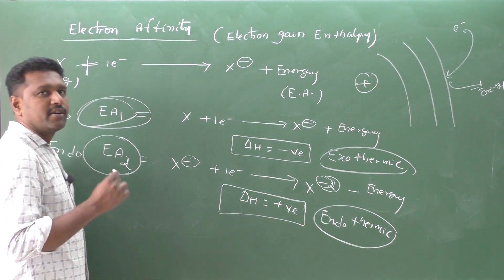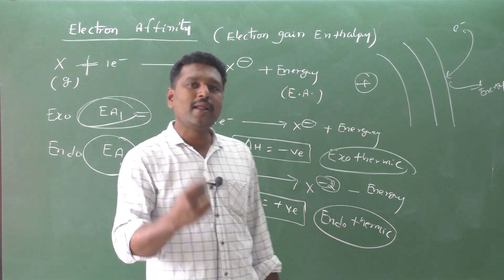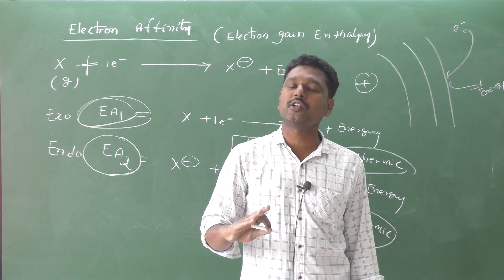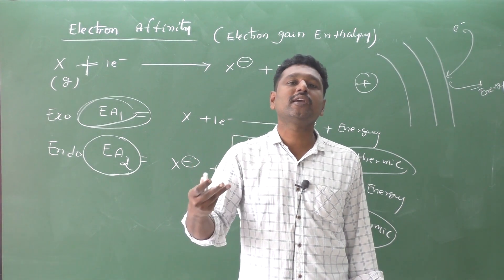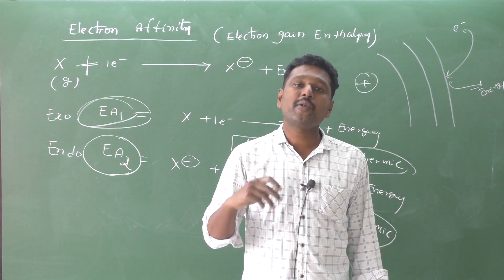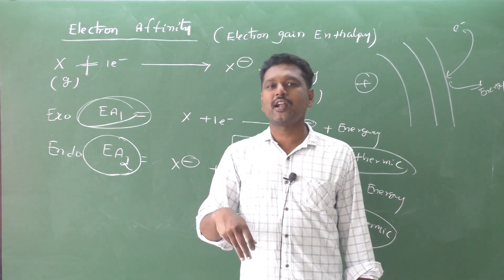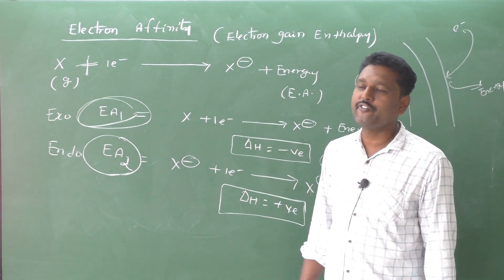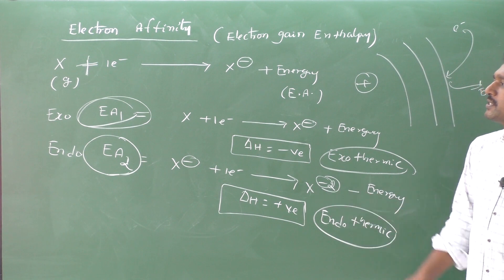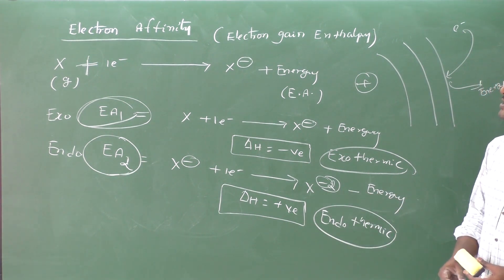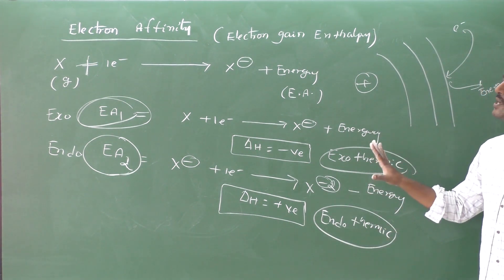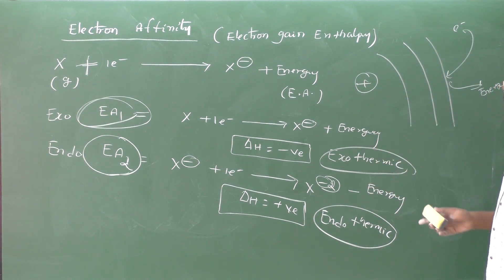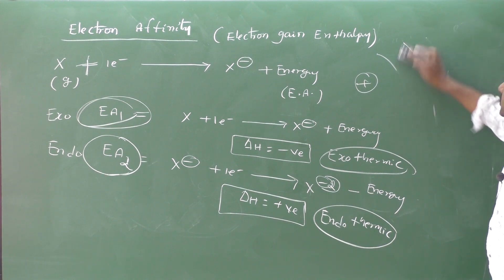In EA1, when you add one electron to a neutral element, energy is released. For EA2, when you add one more electron to the anion — which already has one extra electron — you need to supply some amount of energy. Therefore EA1 is exothermic and EA2 is endothermic.